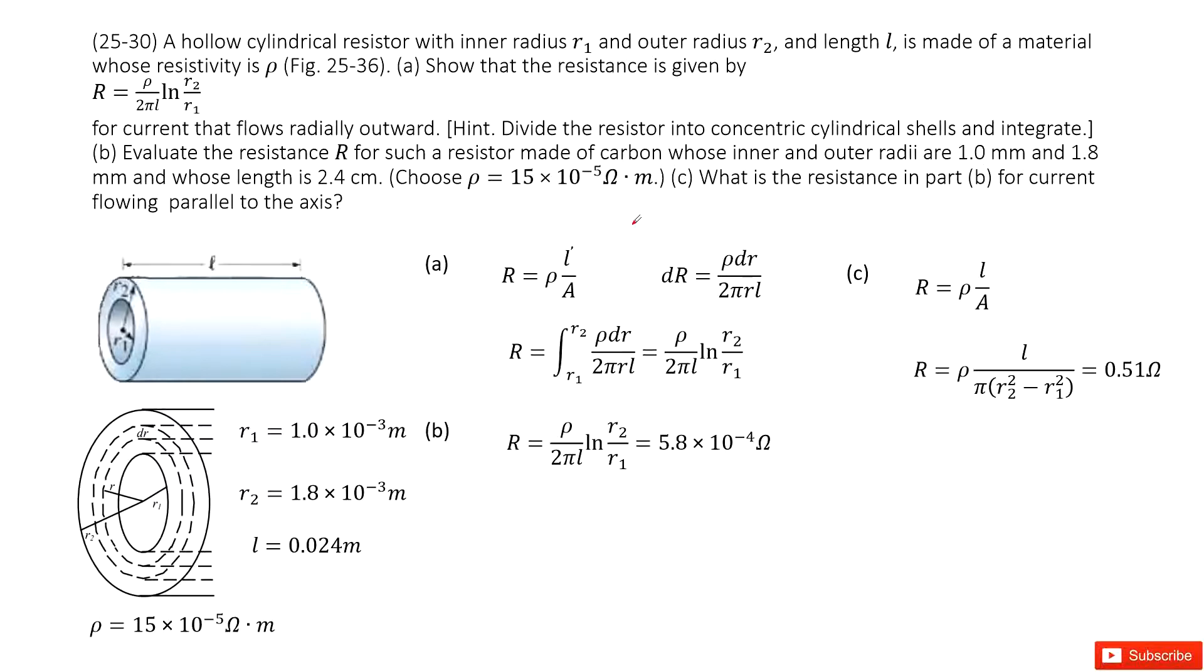Chapter 25 is about electric currents and resistance. We have a hollow cylindrical resistor with inner radius R1, outer radius R2, length L, and resistivity ρ.